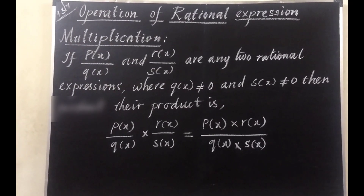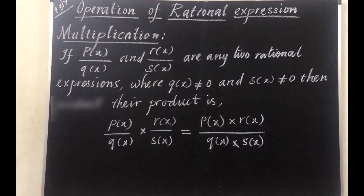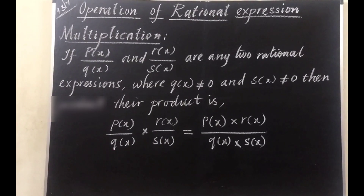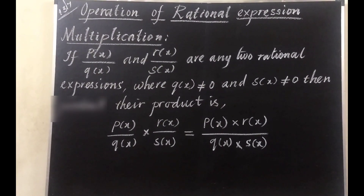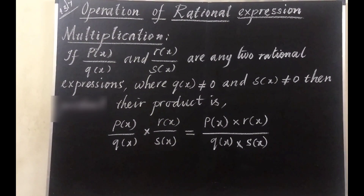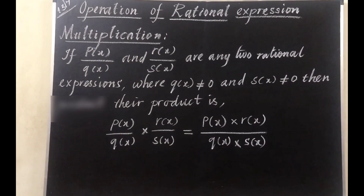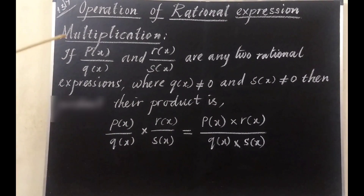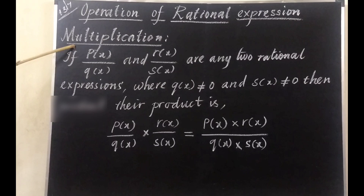Multiplication of rational numbers — what will you do? You are canceling the numbers, simplifying them, and multiplying numerator with numerator and denominator with denominator. The same applies to multiplication of rational expressions.